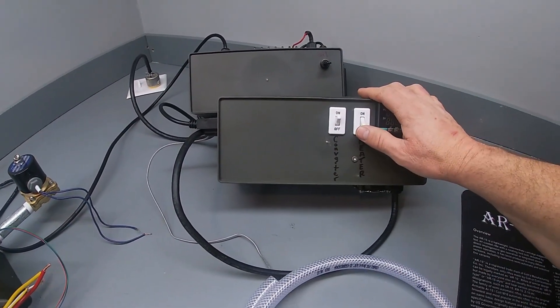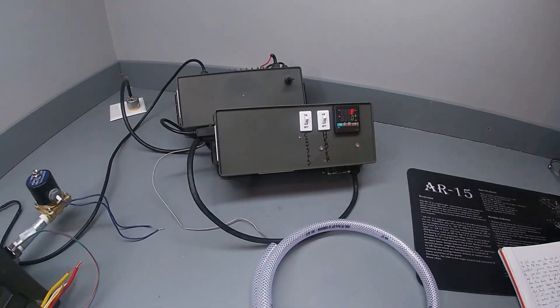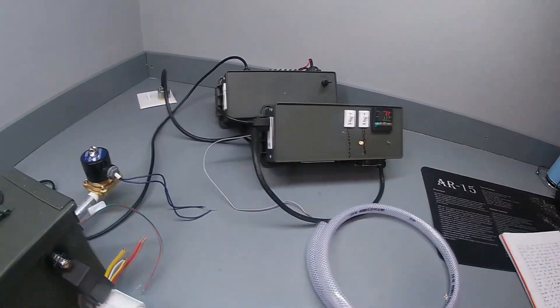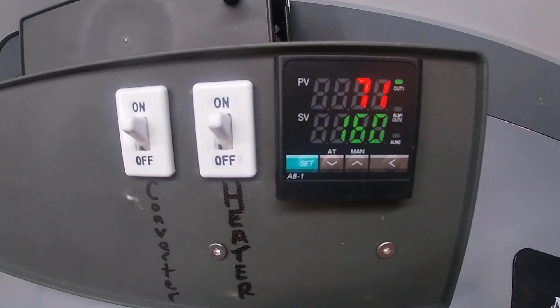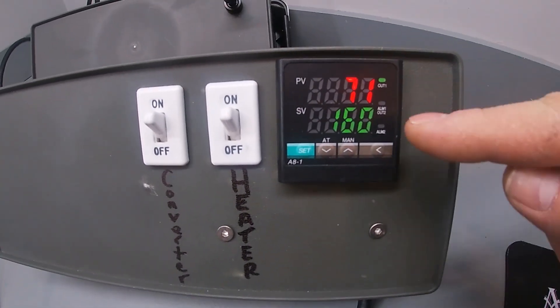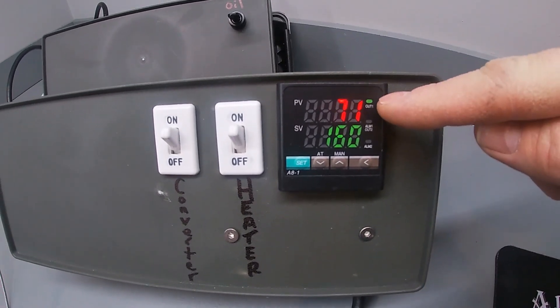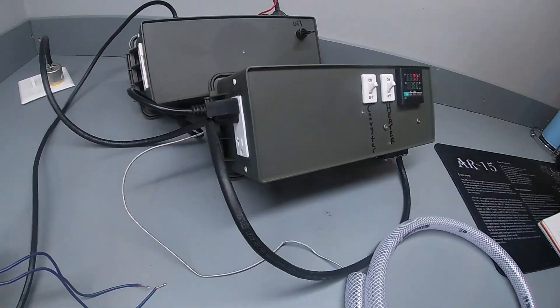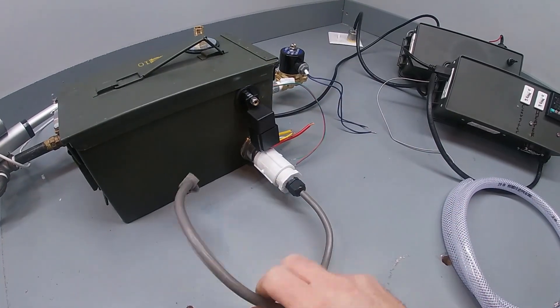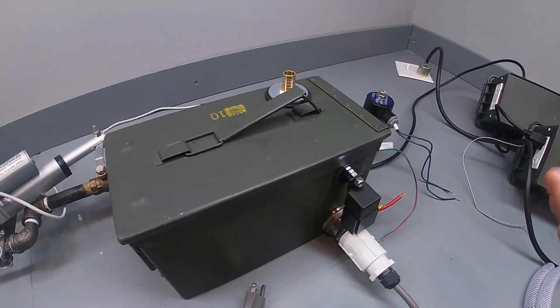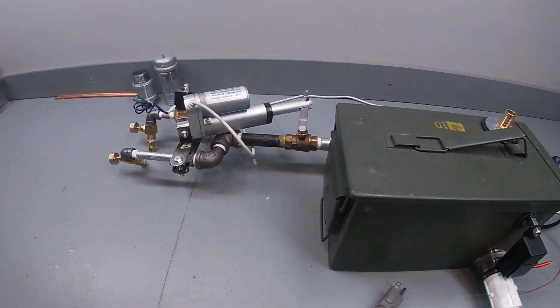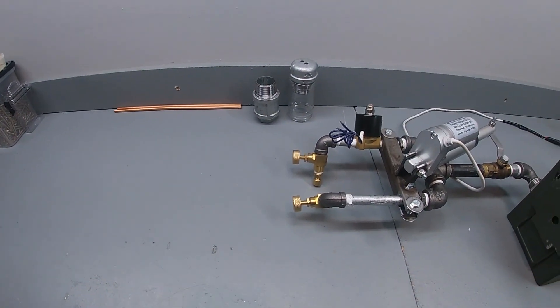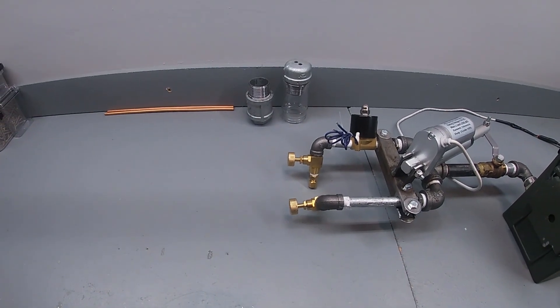Then the next thing I'll do is I will turn on the PID. Now the heater plugs into this lower plug in here. I'm not going to plug it in right now because I don't have any fluid in there. But right now the thermometer is reading 71 degrees and I have it set for 160 degrees. And you can see that that light is on that says out one. That means it's sending power to this plugin, which in turn will turn this heating element on.